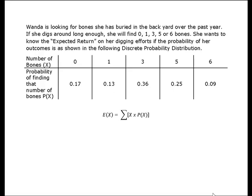These are discrete occurrences because what we know is that there are no values that exist in between the whole number of bones. In other words, she only buries whole bones, and so we're only dealing with discrete observations.